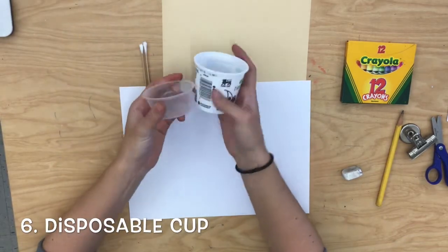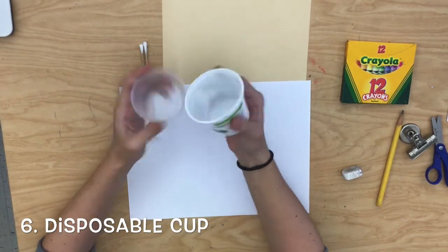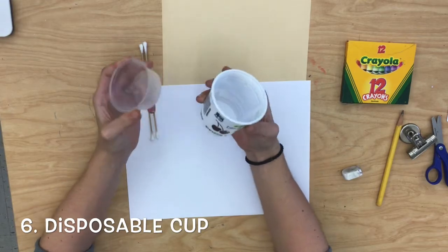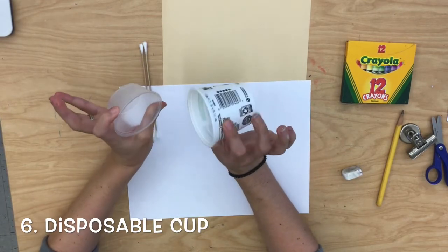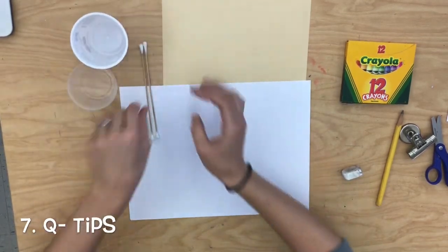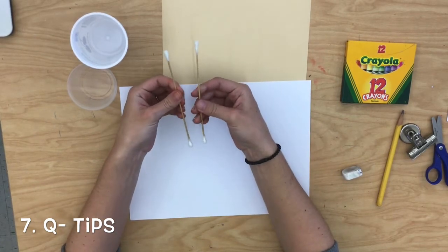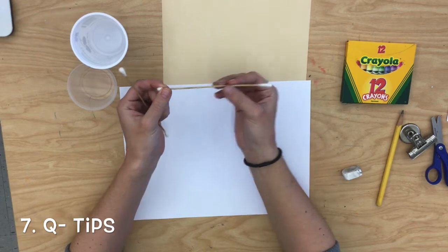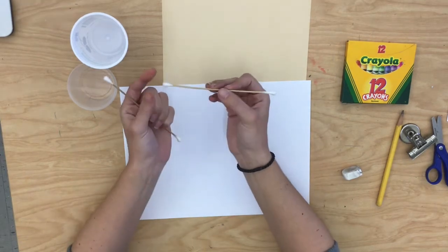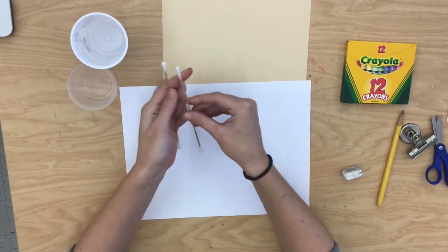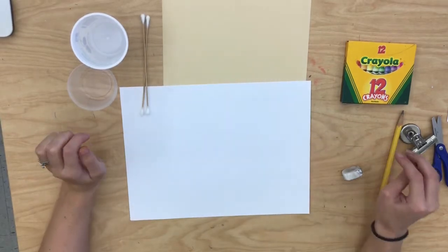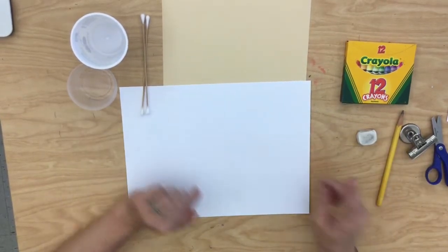Also, you're going to need some sort of disposable cup or a cup that you could throw away after you use it because we're going to get it a little bit messy. And you're also going to need a few q-tips. They could be white on the center. They do not have to be brown like this, but they just need to have that cotton ball end. Those are supplies that you will need to be a creative artist today.